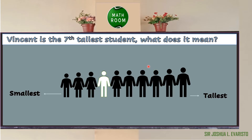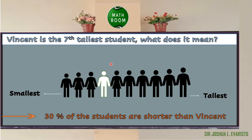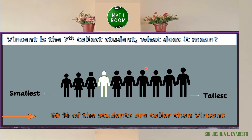Also, there are two students taller than Kenneth, meaning 20 percent of the students are taller than Kenneth. How about if Vincent is the seventh tallest student? There are three students shorter than Vincent, so 30 percent of the students are shorter than Vincent. Also, there are six students taller than Vincent, meaning 60 percent of the students are taller than Vincent.